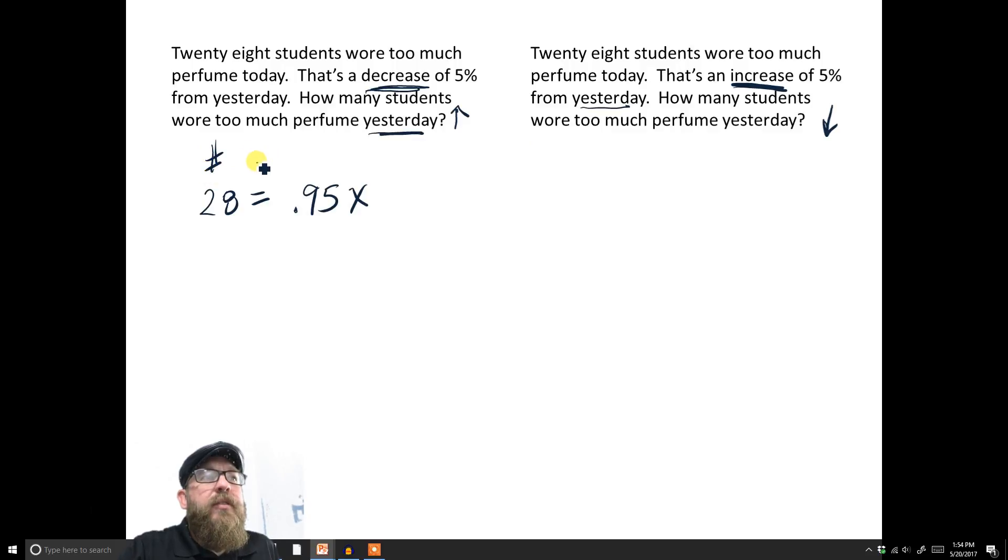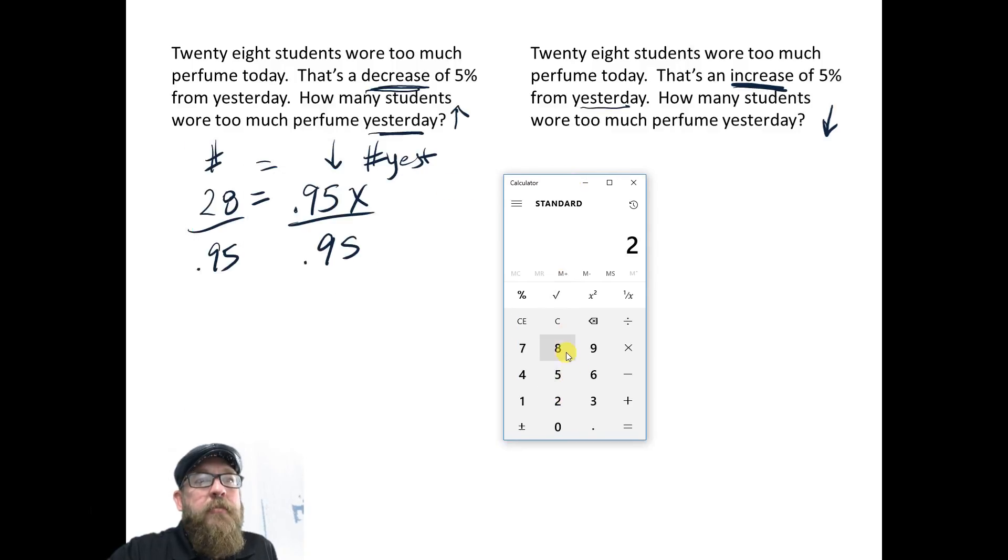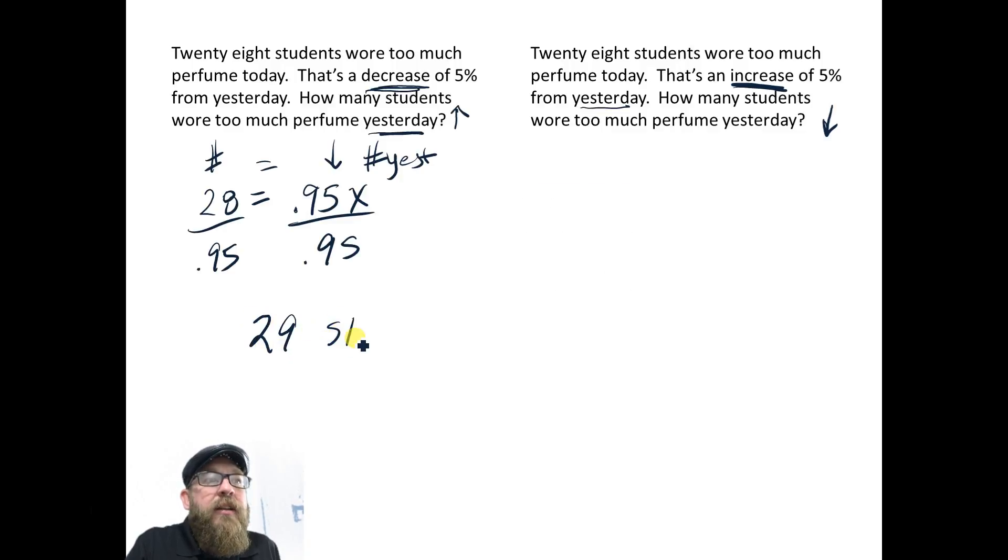28 students wore too much perfume and that is a decrease of 5%. So if that's a decrease of 5%, that means it's 95% of what it was the day before. So what I got right here, I got number of students today, and this is the number of students yesterday, and then my percentage. So to solve that, you would just divide by 0.95. Let's go ahead and take our calculator out right here. 28 divided by 0.95, and we got 29.4. Well, 29.4, we're talking about number of students, and 29.4, we have to round this appropriately. This is less than 5, so this would be 29 students.